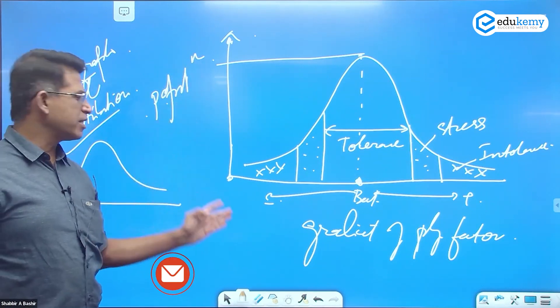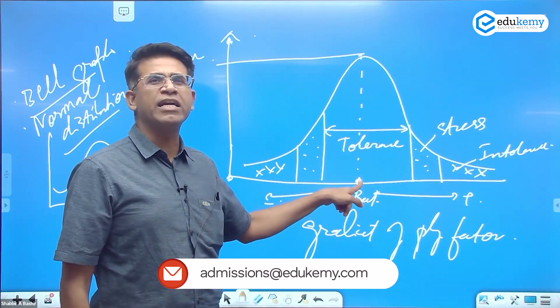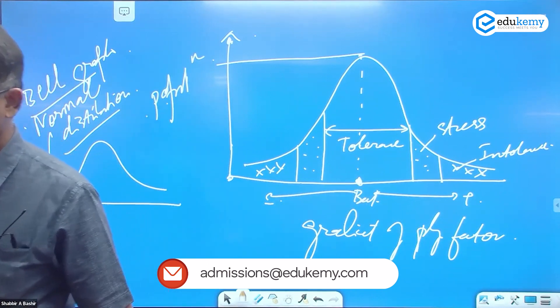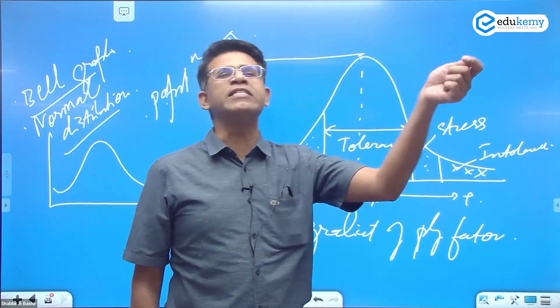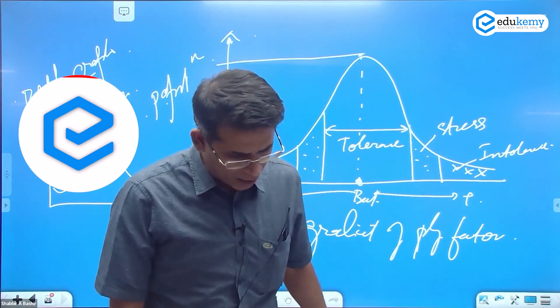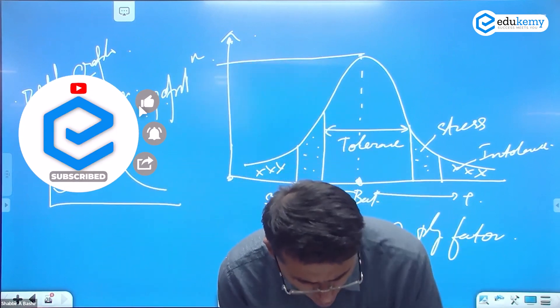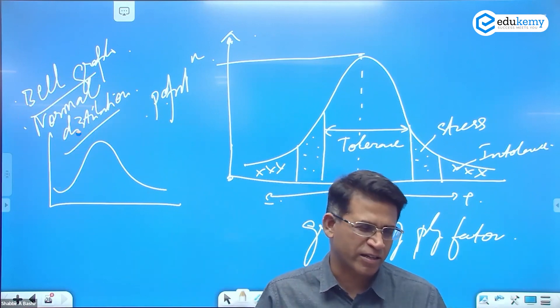Population on this side, population. This is a gradient of physical factors. This is the best ideal conditions. Now write down: the graph depicts how the population of a species varies. The graph depicts how the population of a species varies in a gradient of physical factors.